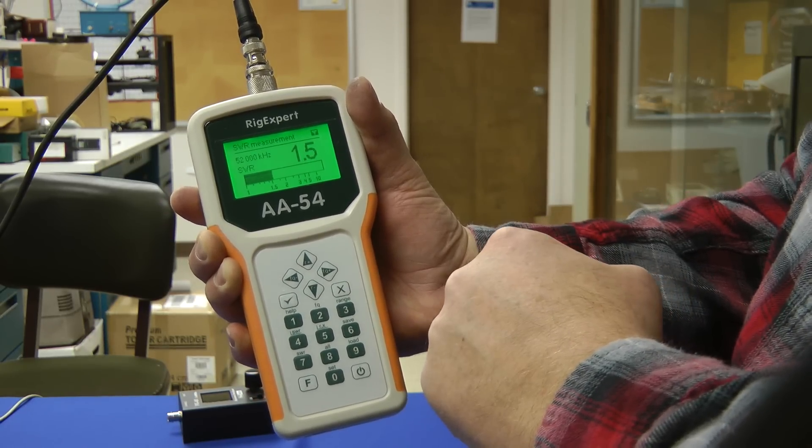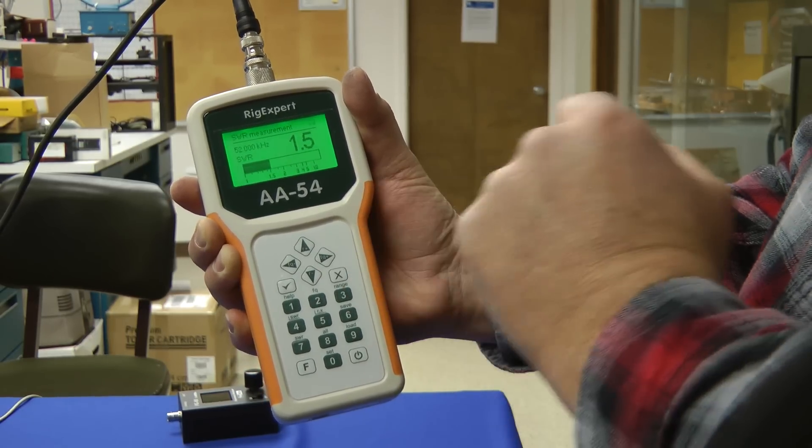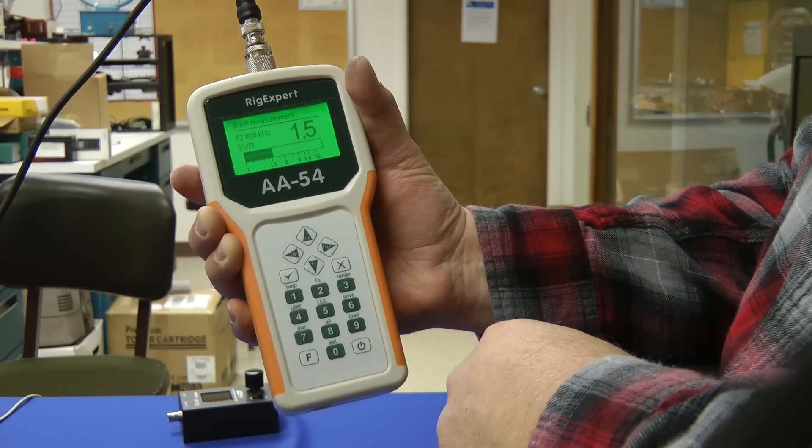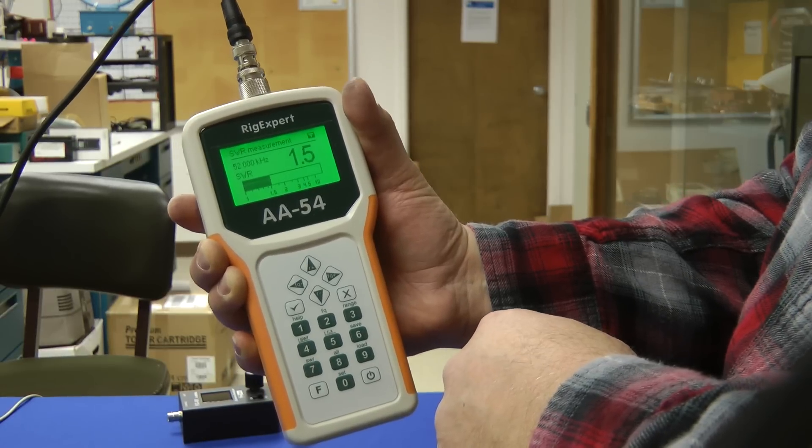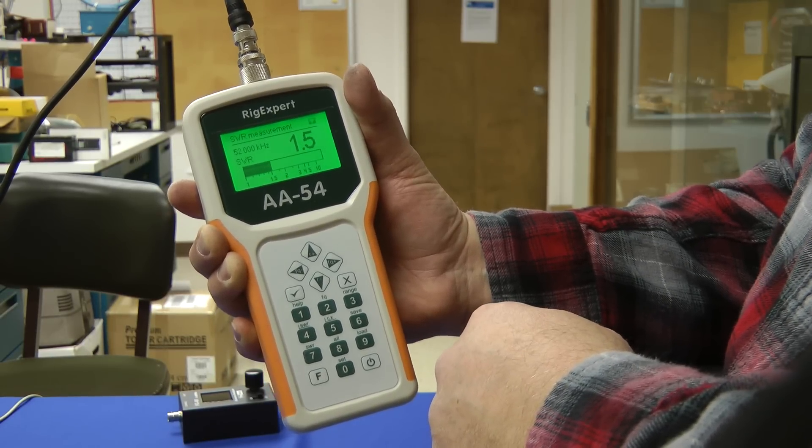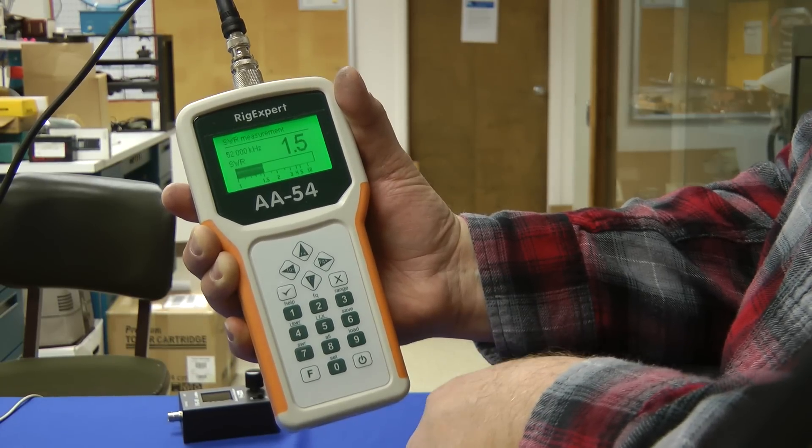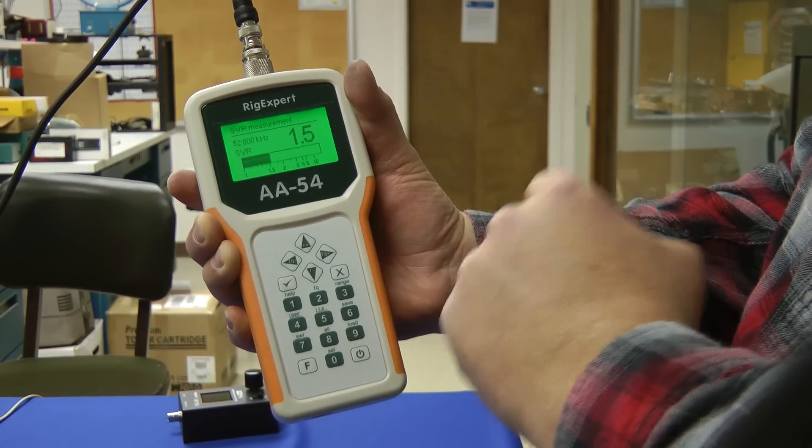Now this also does complex impedances as well. And this is a blast to operate. What I like best about this is that its output is very, very stable because it actually does generate RF. You could actually put this on an antenna. It would be a stable RF generator. And it doesn't drift around, so you get very good precise readings with this.